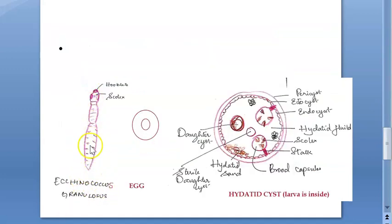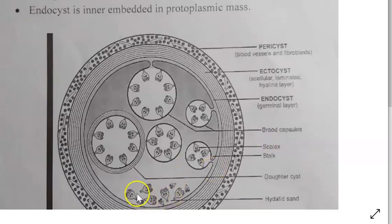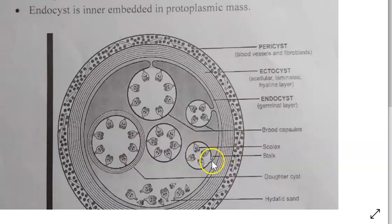Here you can see the echinococcus granulosus worm drawn, with the scolex and hooks on top. This is the egg or ova, and this is the hydatid cyst found in the liver. Inside the hydatid cyst there is ectocyst and endocyst. Inside the endocyst there is a daughter cyst and brood capsules with a scolex shown inside. Then you have the endocyst, ectocyst, and outside that the pericyst which is the adventitia.